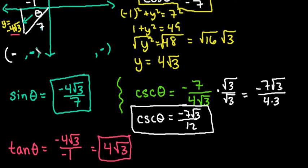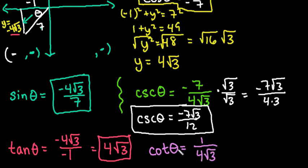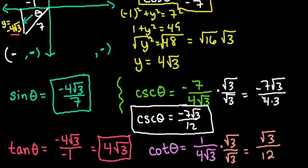Tangent and cotangent are always positive in quadrants 1 and 3, because a negative divided by a negative is positive. Cotangent of theta is the reciprocal of tangent: 1 over 4 square root of 3. Rationalizing the denominator by multiplying by square root of 3 over square root of 3, we end up with square root of 3 over 12.